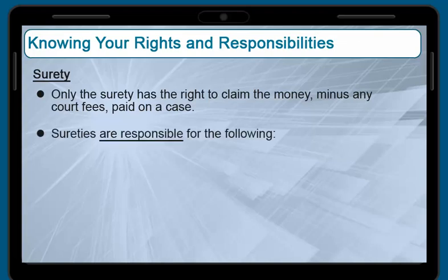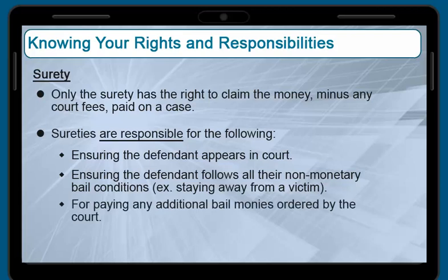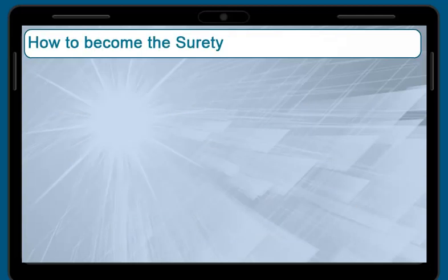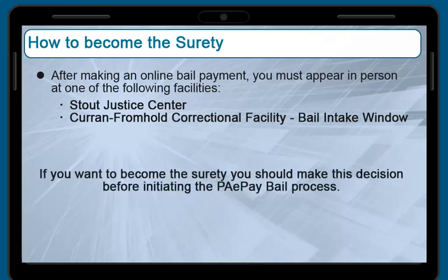If you want to be eligible to get your money back, minus any court fees, you must become the surety. As the surety, however, you are responsible for the defendant appearing for scheduled court dates, for ensuring the defendant follows their non-monetary bail conditions, and you are liable to pay any additional bail money ordered by the judge. To become the surety, you must appear in person with your valid government-issued identification card at the Stout Justice Center or at the Kern-Fromhold Correctional Facilities bail intake window. The name on the ID must match the name on the credit card in order to complete the surety paperwork. If you want to become the surety, you need to make that decision before starting the PA ePay bail process.